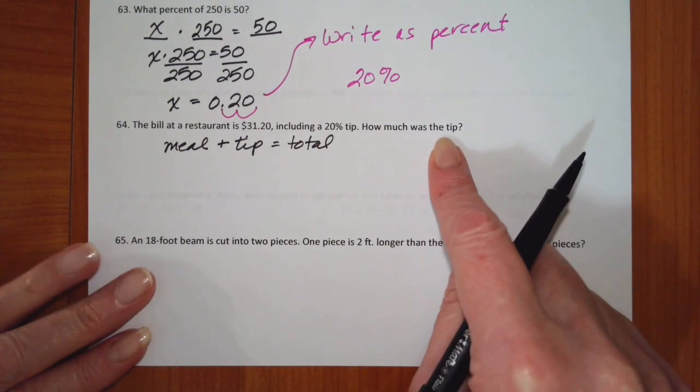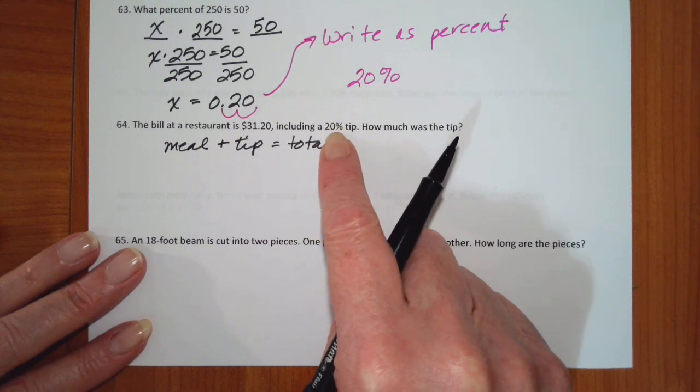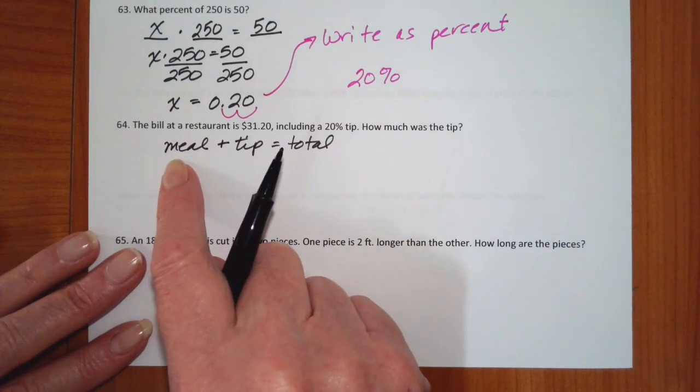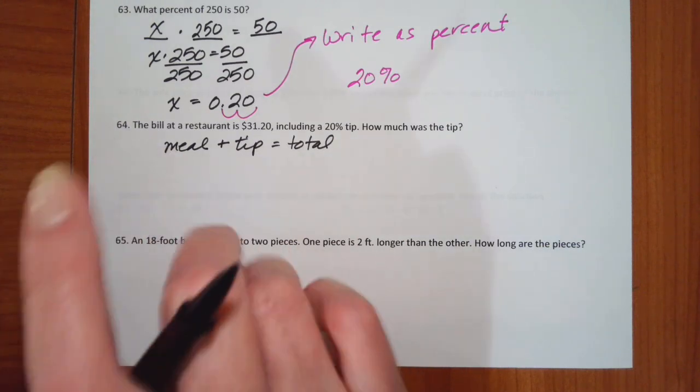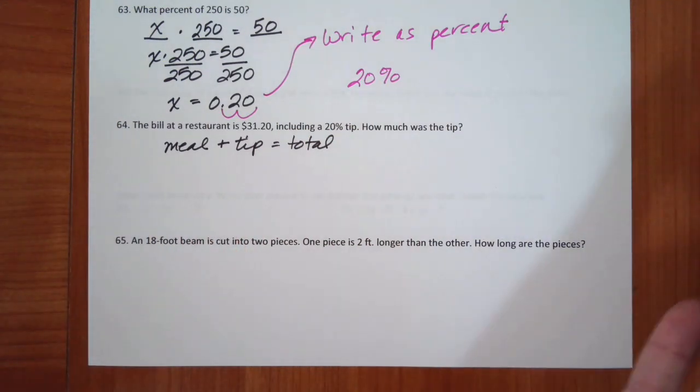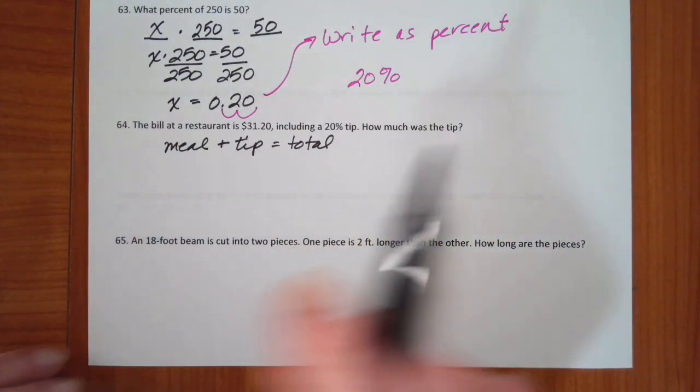Well, if we went directly to find the tip, we would have to find 20%, but of the meal, and we don't know what that is. And so this way, we're going to have to figure out what the cost of the meal is, and then go back and figure out what the tip is.